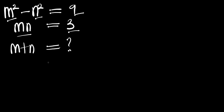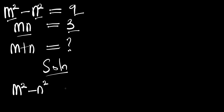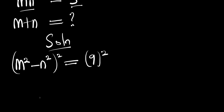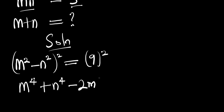Let's go ahead and do that. We have m squared minus n squared equals 9. We take the squares of both sides of this equation, giving us m to the power 4 plus n to the power 4 minus 2m squared n squared equals 81.